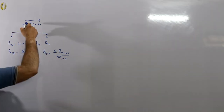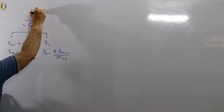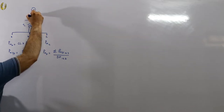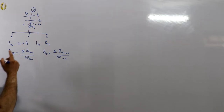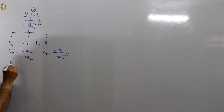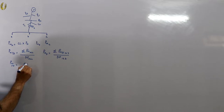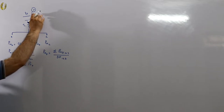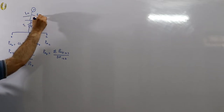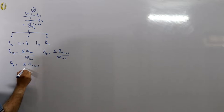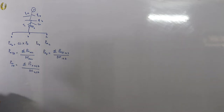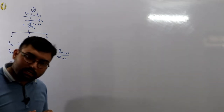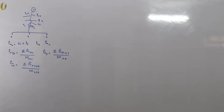Similarly, this feeder is connected to a substation, and there are multiple feeders — say X, Y, Z. The maximum demand on the substation is the summation of the maximum demands of feeders X, Y, Z divided by the diversity factor among them. Based on this, we have example 3.9 from the book.